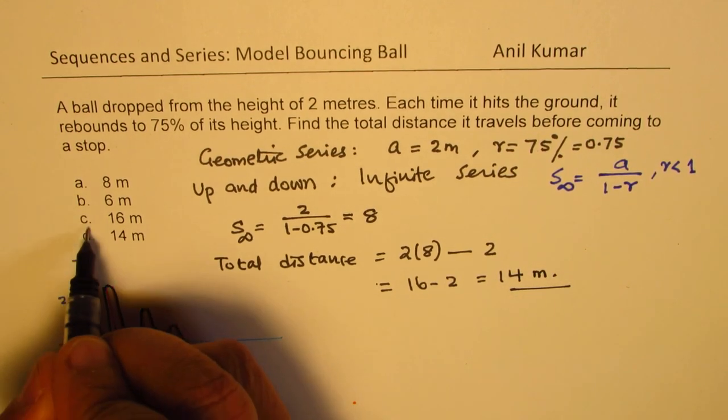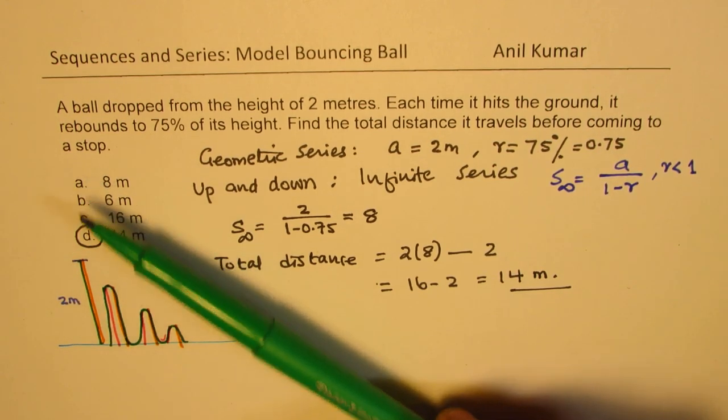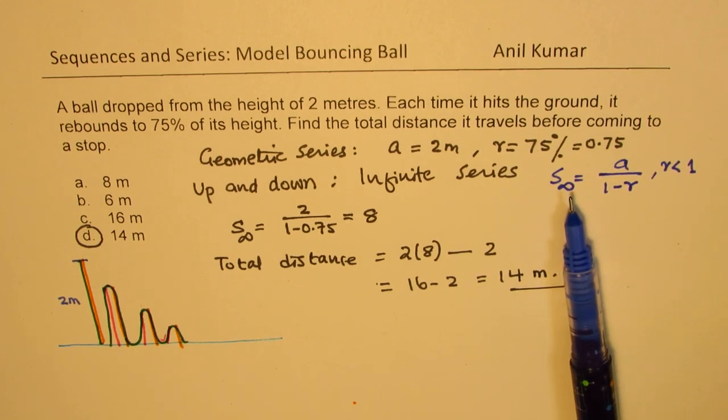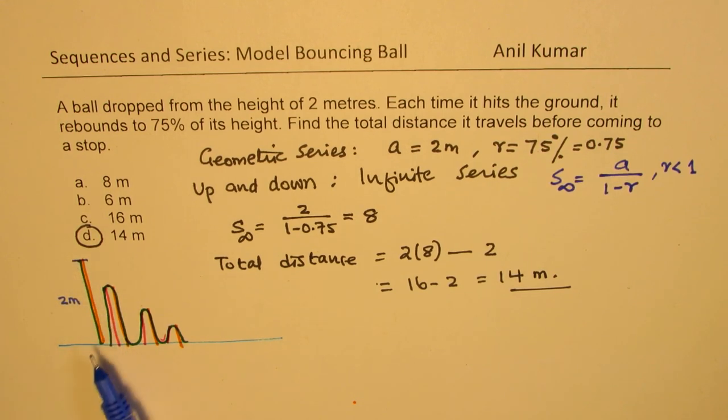So 14 meters is the right option which is option D. So this is very important as most of the numbers here may relate some way or the other. Your values in the solution. However you should be very clear that when you have a question like this you could use the sum of infinite series.